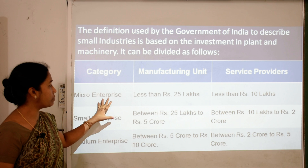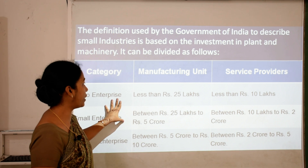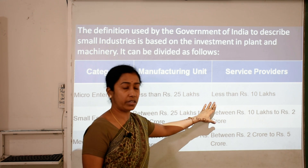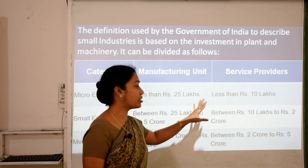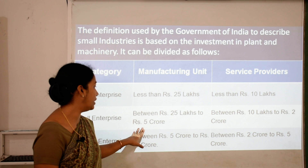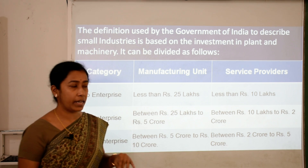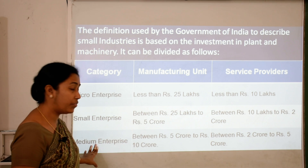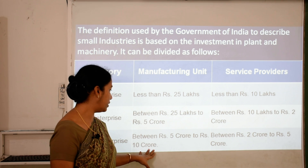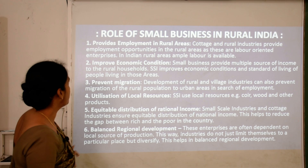The MSMED Act categorizes industries into manufacturing units and service providers. Micro enterprises: manufacturing investment less than ₹25 lakhs; service sector investment less than ₹10 lakhs. Small enterprises: manufacturing investment between ₹25 lakhs and ₹5 crores; service providers between ₹10 lakhs and ₹2 crores. Medium enterprises: manufacturing investment between ₹5 crores and ₹10 crores; service industries between ₹2 crores and ₹5 crores.